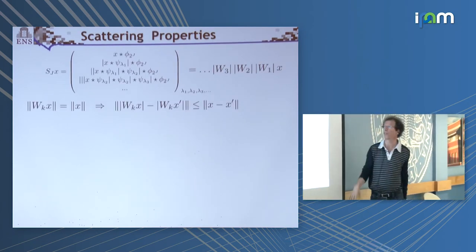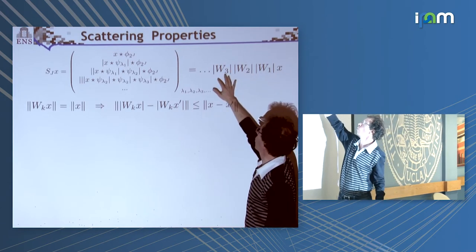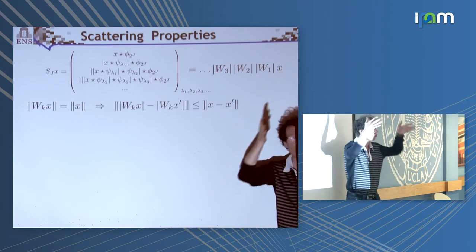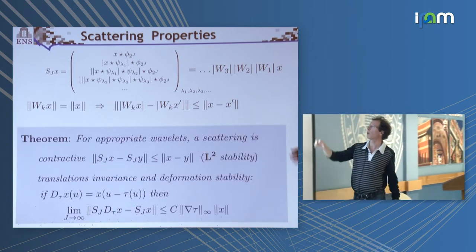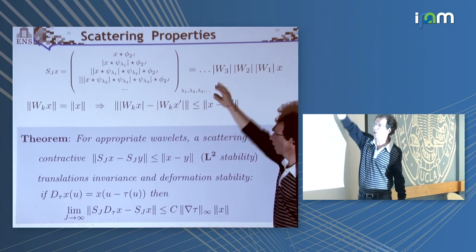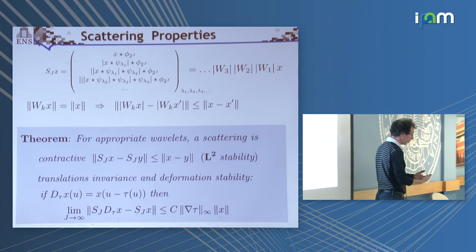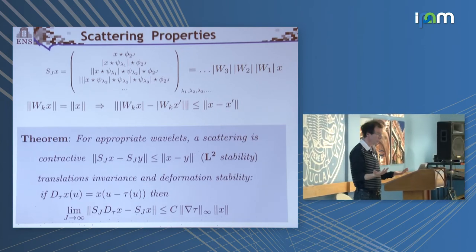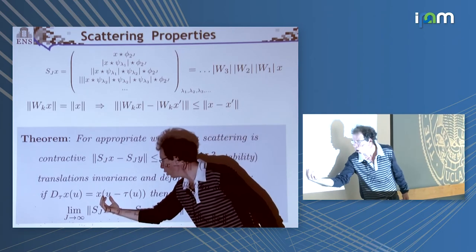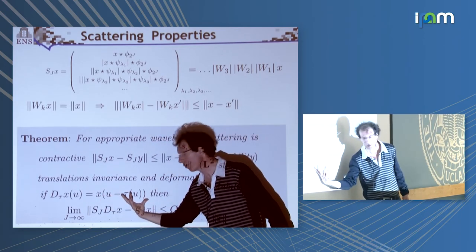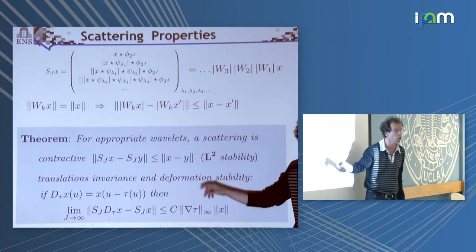What are the properties? We took the signal and applied these operators — wavelet transform, modulus, and so on. All these operators are non-linear contractive operators. Two properties emerge: if you iterate this, you get something which is contractive. The second property is that you get something which is stable by deformation. The reason is that wavelets are stable by deformation. So if you take your signal and deform it a little bit, in the scattering domain, applying a Euclidean distance, the distance is going to be of the order of the deformation.